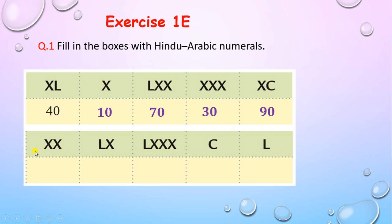Can you tell the value of XX? It's 20. The value of LX: L stands for 50 and X stands for 10. The smaller symbol comes after the bigger symbol, so we add: 50 plus 10 equals 60. The value of LX is 60.